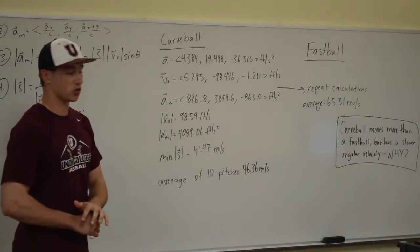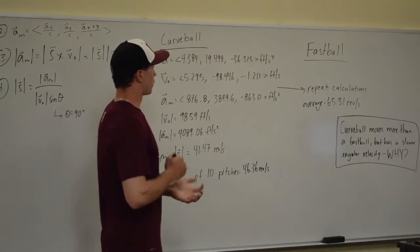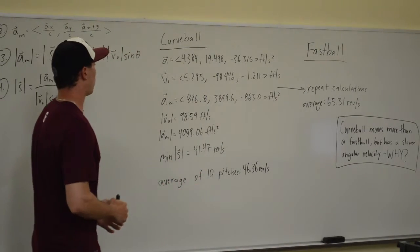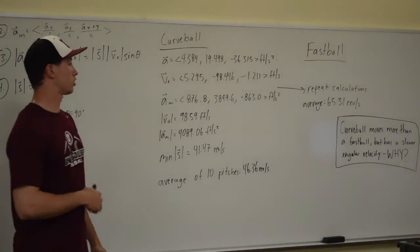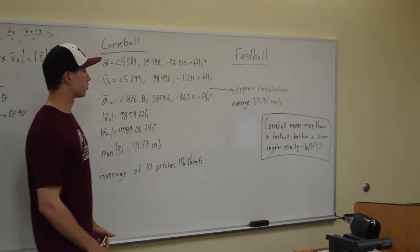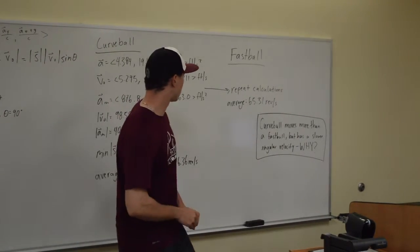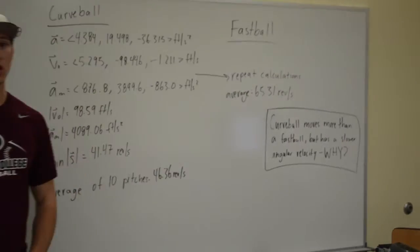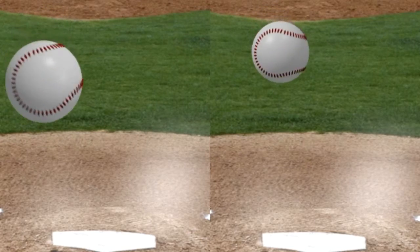Which brings us to the question: if a curveball moves more than a fastball, why does it have a slower angular velocity than a fastball? So the reason that a curveball has a slower angular velocity than a fastball is because a curveball is also accelerating in the direction of gravity,